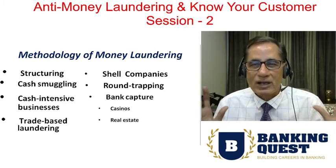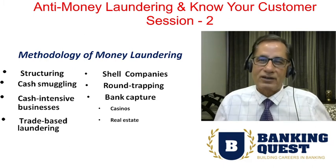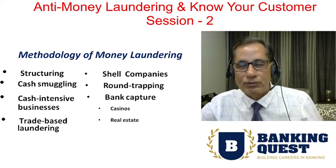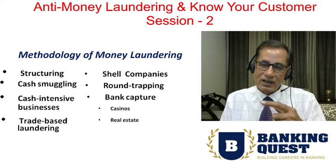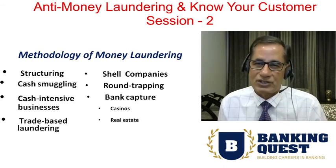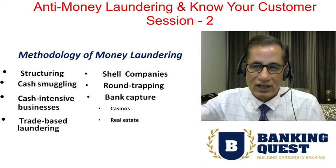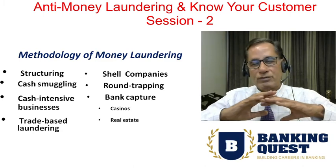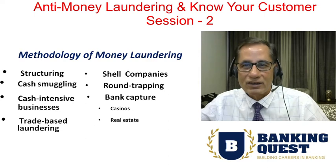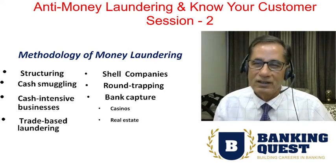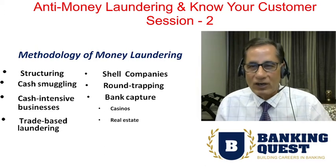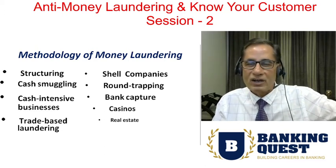The next methodology is bank capture. Certain very large money launderers buy a majority stake in a small bank in a small country, become its promoters, and complete the round trapping mechanism through that bank. After their money laundering objective is achieved, they sell their majority stake or close the bank altogether — so that if any investigating agency later tries to find the trail of money laundering, they cannot find it.